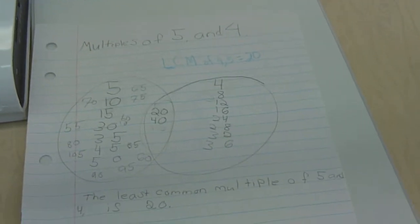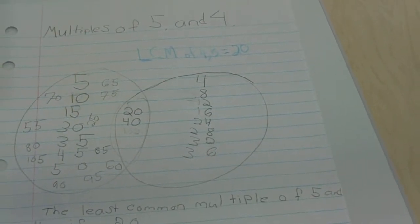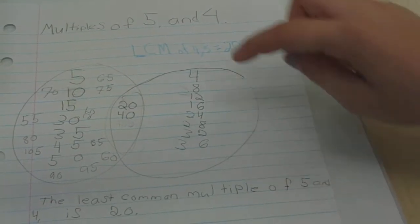And you found the least common multiple too. What's that? The least common multiple of 5 and 4 is 20. Wonderful.